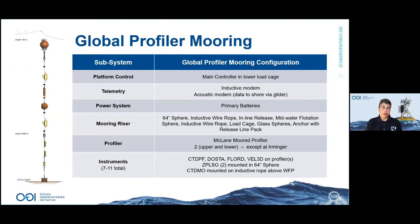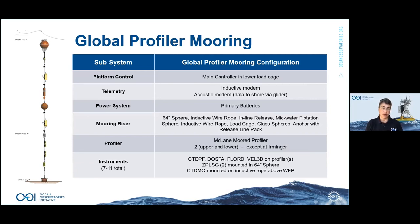The global profiling mooring has the same top sphere — this time at 150 meters — and also a midwater sphere for deeper locations like Station Papa. At Station Papa there are two profilers; at Irminger, which is shallower, there is only one profiler. These have a controller in a load cage at depth, with only inductive and acoustic communications, battery-powered. A profiler makes measurements throughout the water column and an ADCP sits at the top of the inductive rope section.